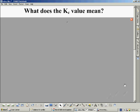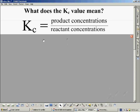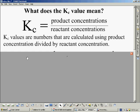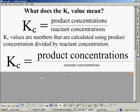So we know how to write Kc expressions but what does the Kc value actually mean? We know it is worked out by product concentrations divided by reactant concentrations. The mathematics can get a little bit messy if there are different mole ratios involved in the equation. But essentially we are looking at a ratio of product concentration divided by reactant concentration.